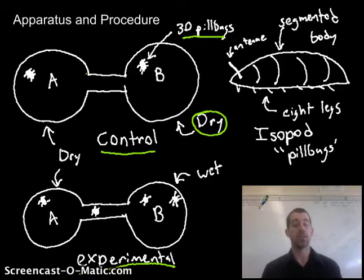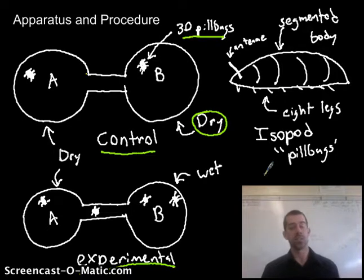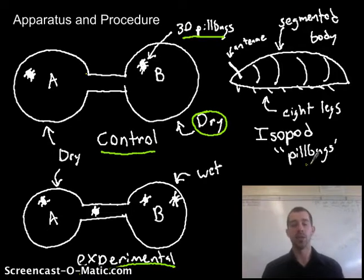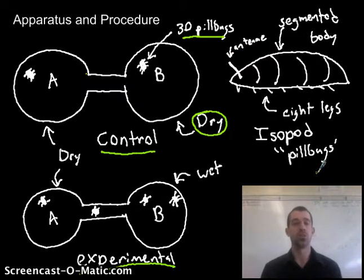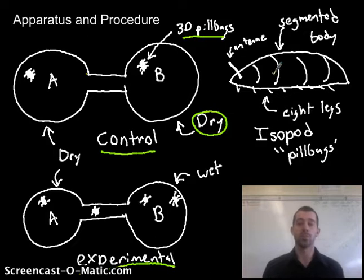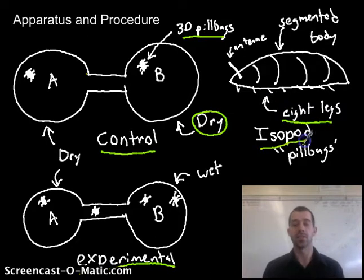I've also drawn important biological diagrams. In this case I needed to draw a picture of a pill bug so that everybody knows what we're talking about. This is not just a picture — you don't just draw a little bug with a smiley face. You want to draw important details: label how many legs it has, what its scientific name is, things like that.